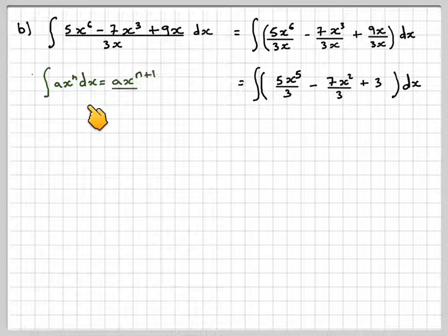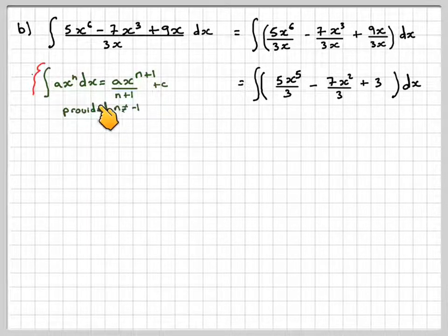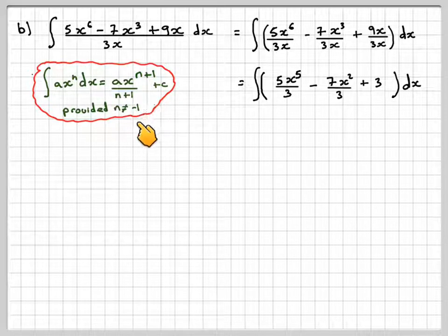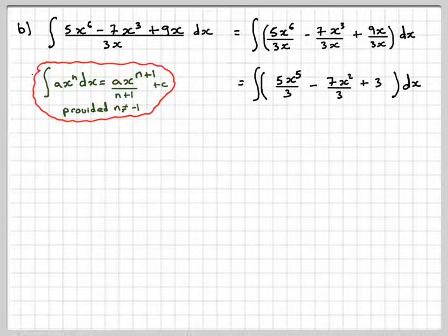Okay, so ∫ax^n dx, the integral of that is ax^(n+1)/(n+1) + c, provided n is not equal to -1. So doing that to each of these, we now get 5x⁶/(3×6).